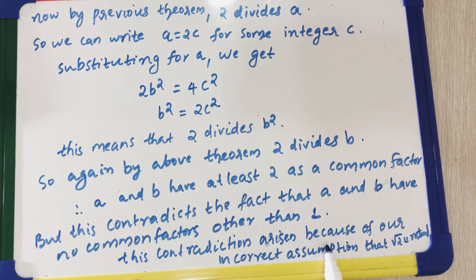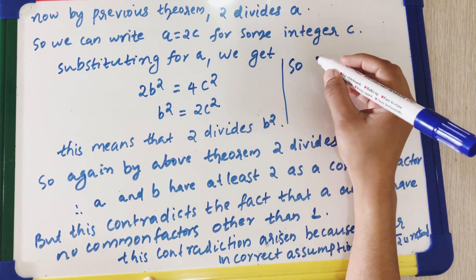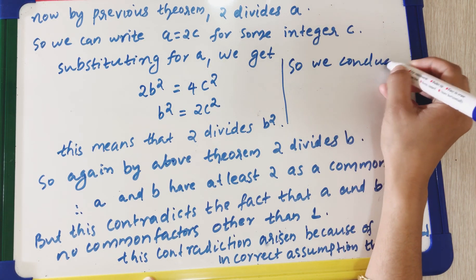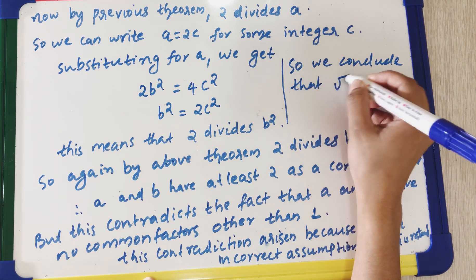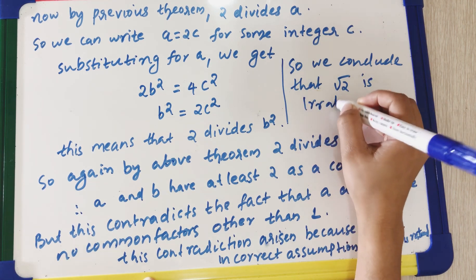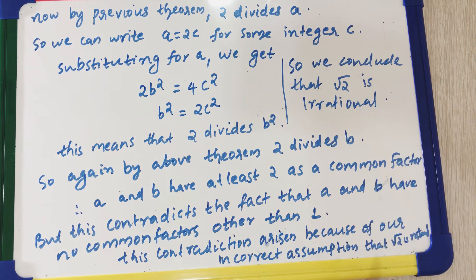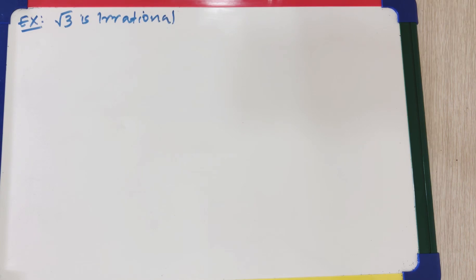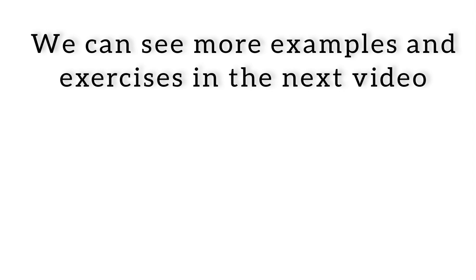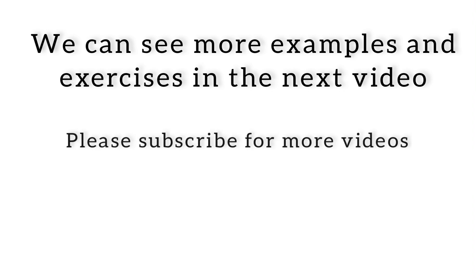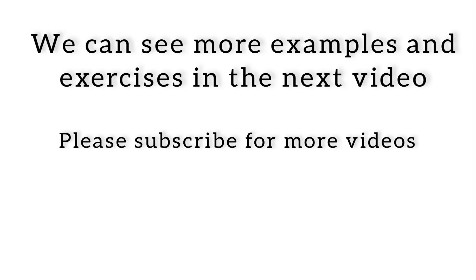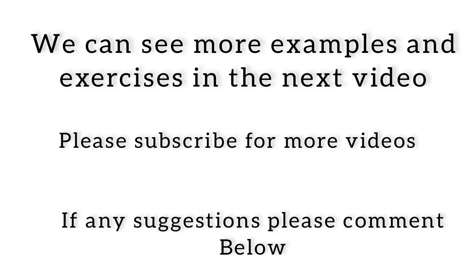This contradiction arises because of our incorrect assumption that √2 is rational. So we conclude that √2 is irrational. Hence the proof. Similarly we can prove that √3, √5, etc. are irrational. We will discuss the proofs for irrationality of √3 and √5, along with more examples and exercises, in the next video. Thank you for watching, stay tuned for more videos.